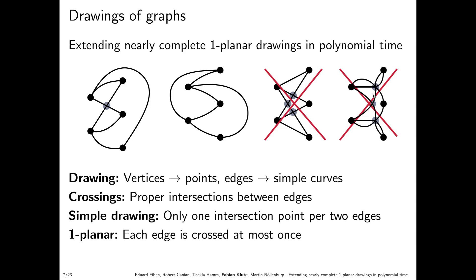A one-planar drawing is one in which each edge is crossed at most once. This leaves us with the two drawings on the left. The last notion to introduce is a cell — the analogue of a face in a planar drawing. One cell has a boundary similar to a face with just vertices and edges; another has a crossing on its boundary. If we planarize the graph, that crossing turns into a vertex, yielding a face in a planar drawing.